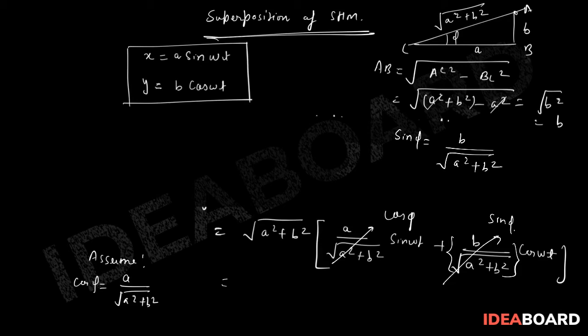Now the function which I have, let us say the net was X plus Y. Say this is Z. Z is equal to under root of A square plus B square into,